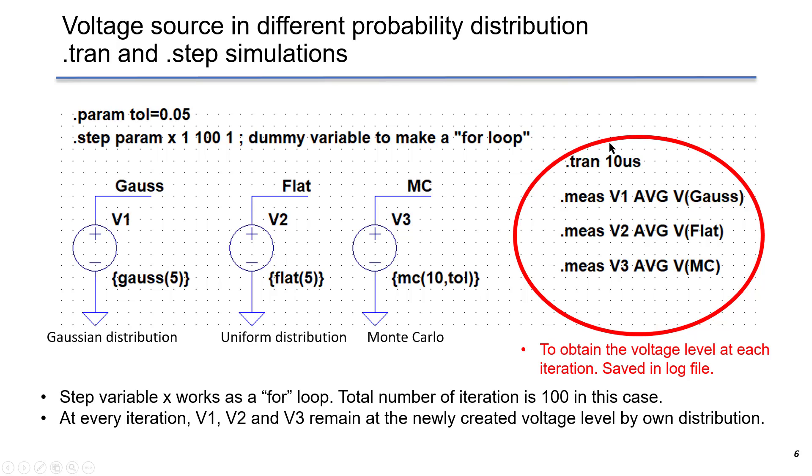This is the transient simulation setup. We run each simulation for 10 microseconds. We measure the average value of each voltage source, V1, V2, and V3, giving the names as Gauss, Flat, MC, respectively. We obtain the voltage level at each iteration, and they are saved in a log file.